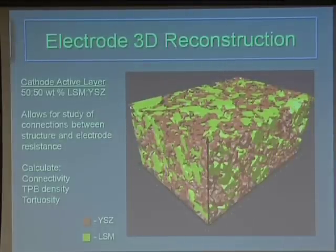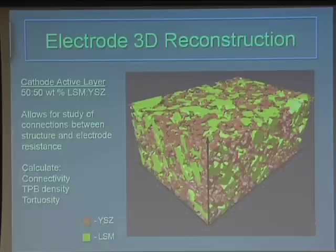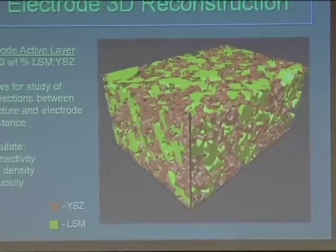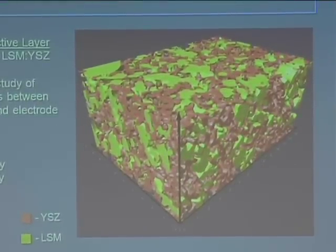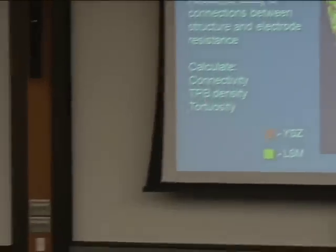This is an example of what you get from this kind of work: a three-dimensional reconstruction of an LSM-YSZ composite cathode. What we really care about is what we can calculate from the structure — specifically three-dimensional characteristics that relate to electrochemical performance. These include the connectivity of the phases (isolated particles are inactive in the electrochemical reaction), the tortuosity of those phases (how winding a path is, manifested in diffusion limitations), and the triple phase boundary density — a line density where the three phases intersect, which is generally where the electrochemical reaction takes place.